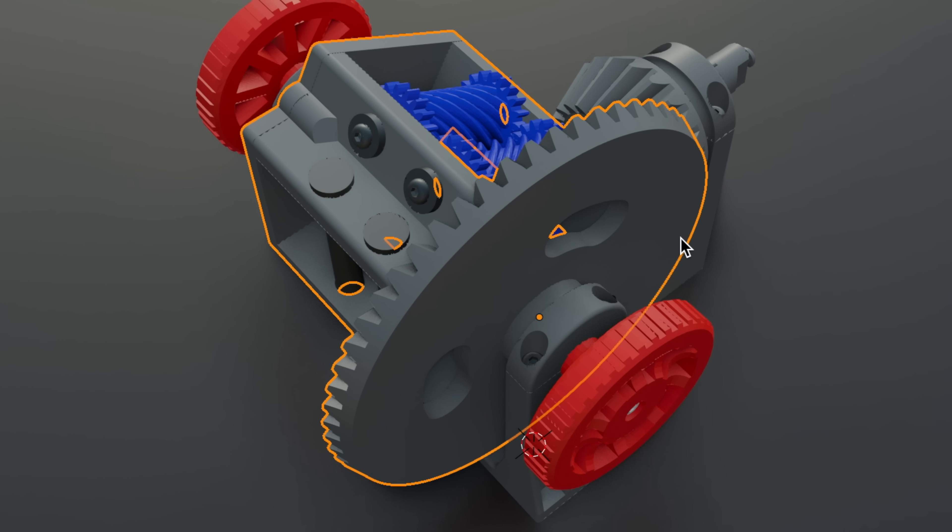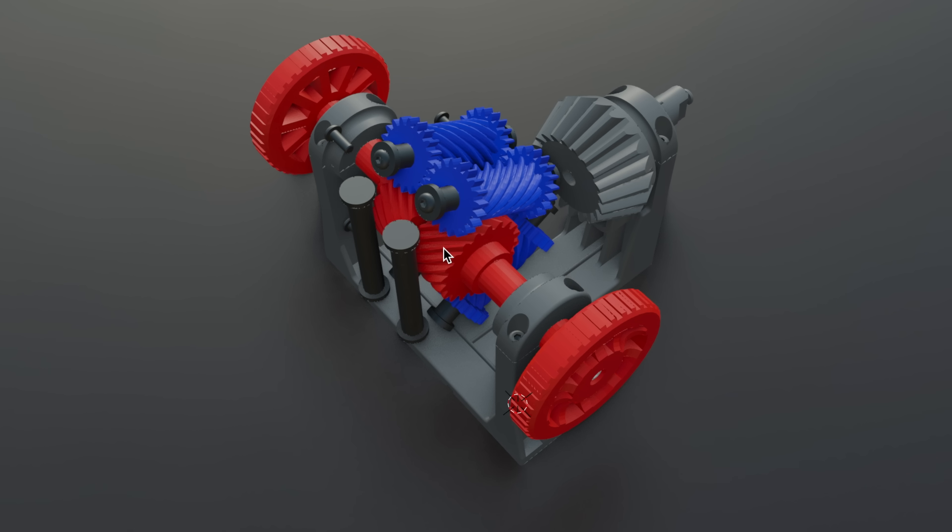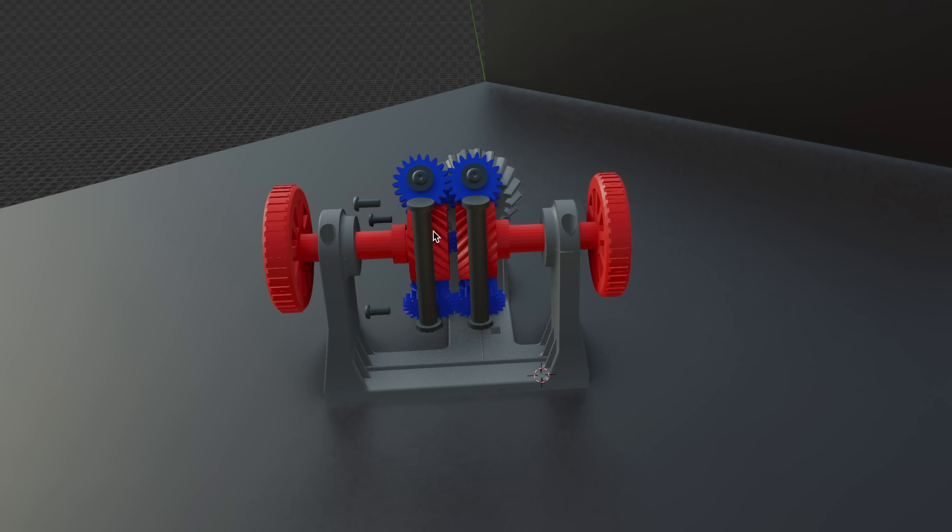At first, it may seem very confusing, but it's actually really simple. If we remove the housing, you can see that each wheel is connected to a helical gear and the axle is completely disconnected.